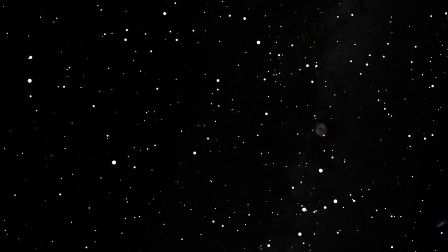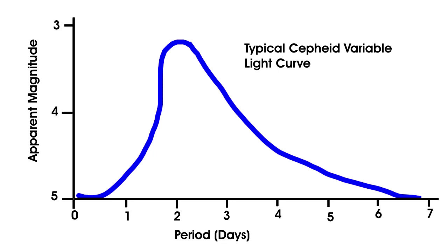Henrietta Leavitt detected a pattern in one class of these blinking variable stars. These stars are called Cepheid variables. They have a period of one day up to 70 days, and they have a unique light curve signature. The light curve looks like this: a rapid rise to maximum brightness, with a slow fall to minimum brightness. This curve is the signature of a Cepheid variable.